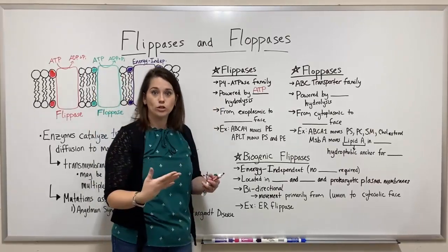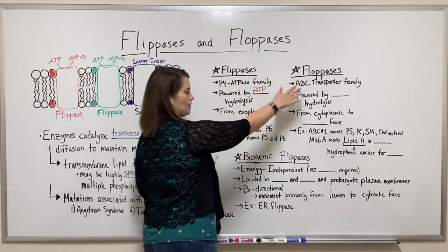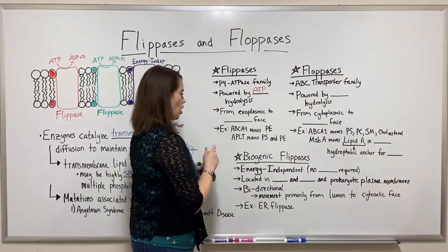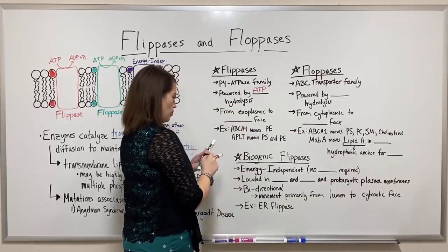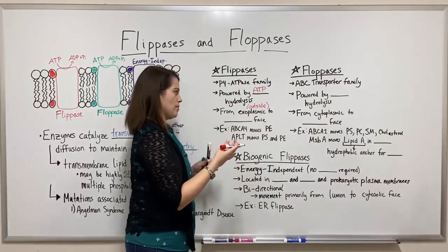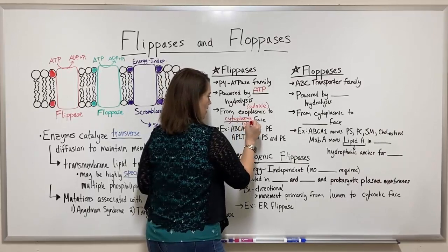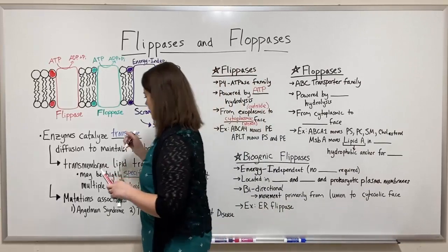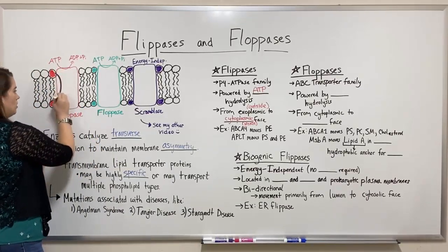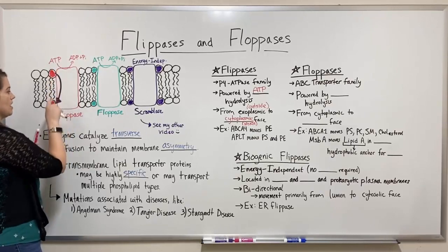The cell has to expend energy to get flipases to work. The major distinction between flipases and flopases is the direction they're moving things. Flipases move phospholipids from the exoplasmic face — the outside face of the membrane — to the cytoplasmic face, the inside face. So the arrow shows movement from the outside to the inside.